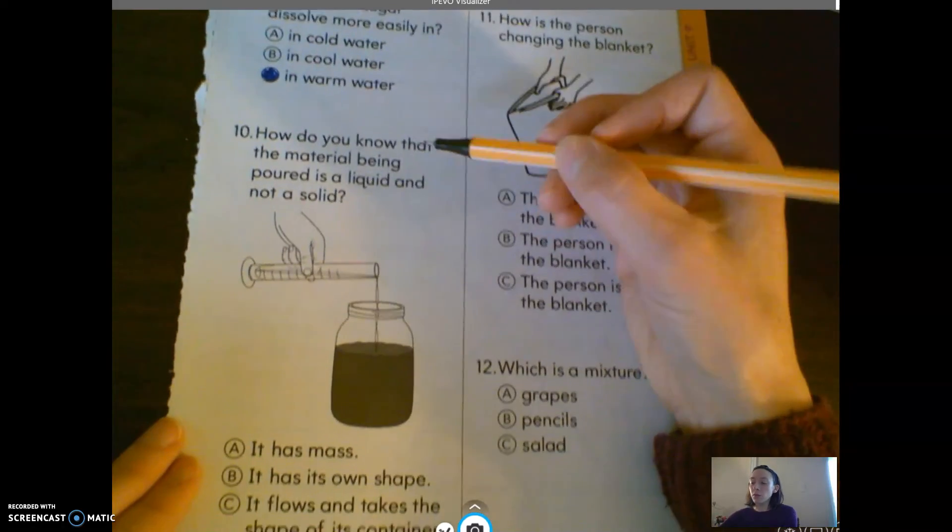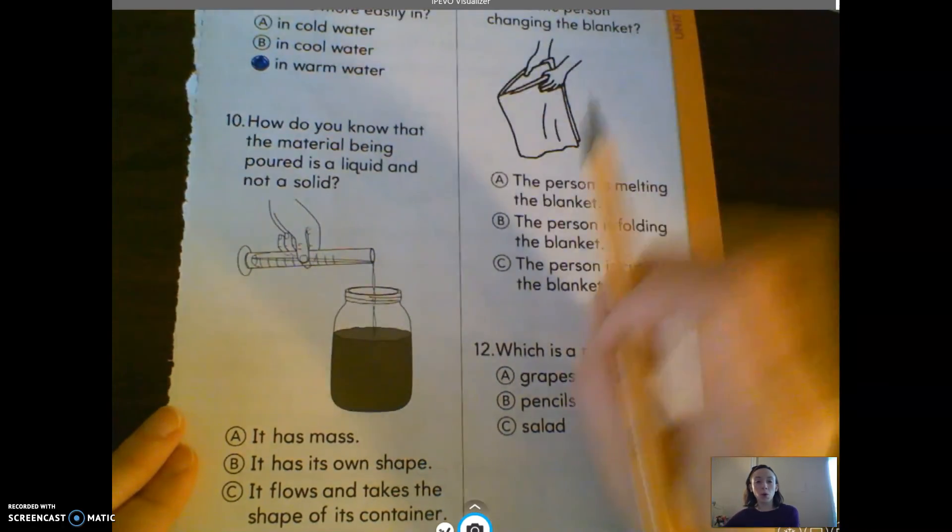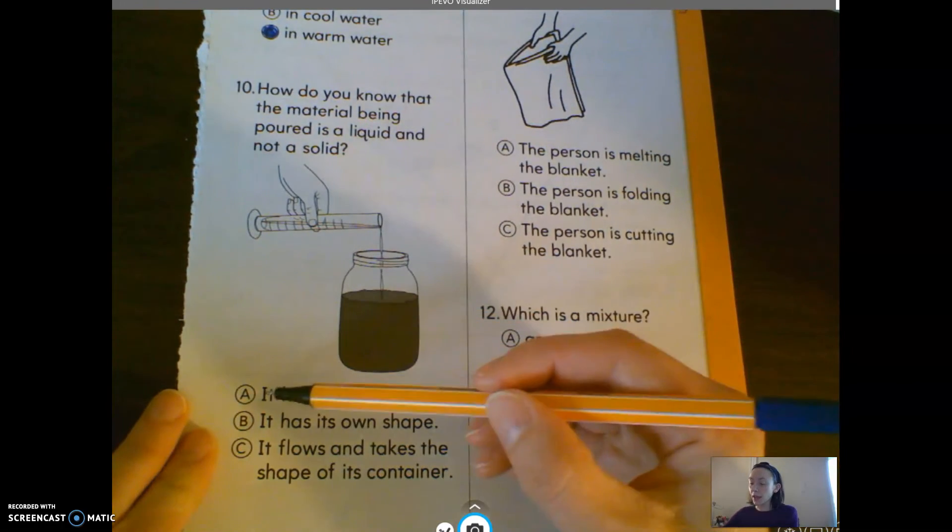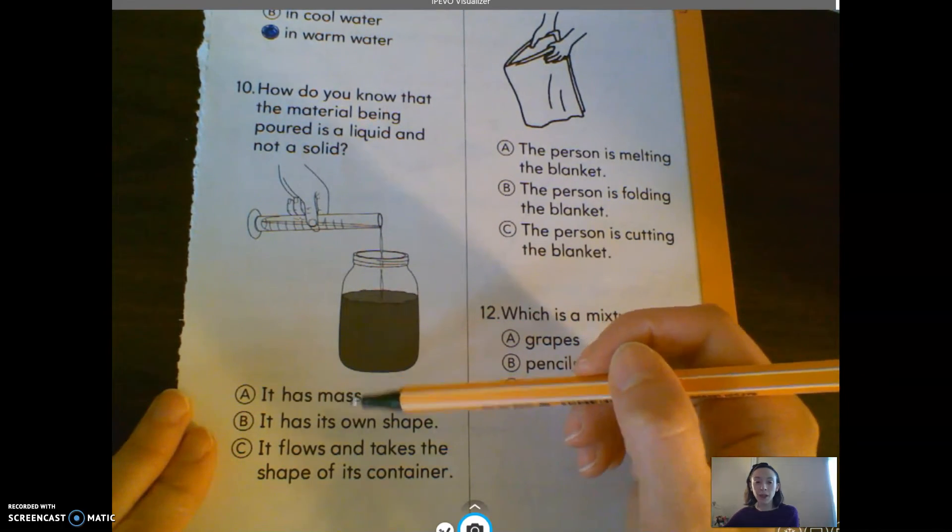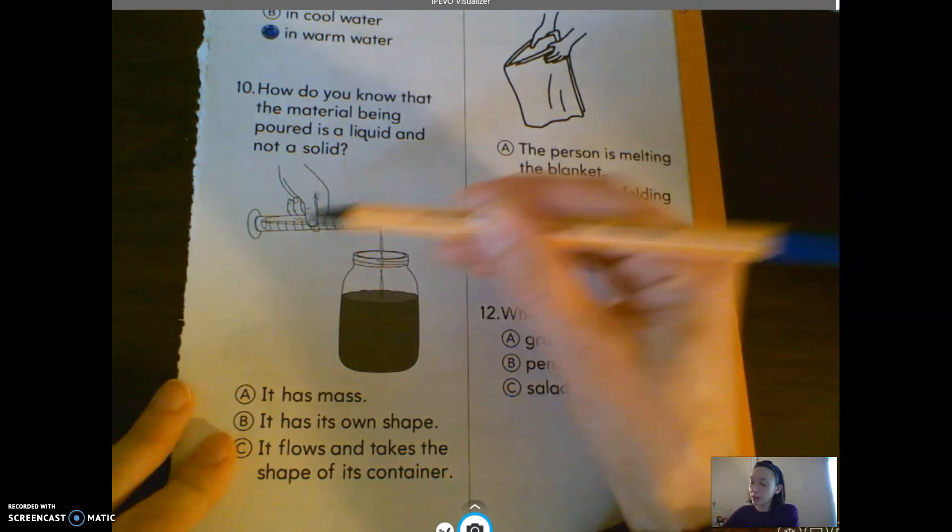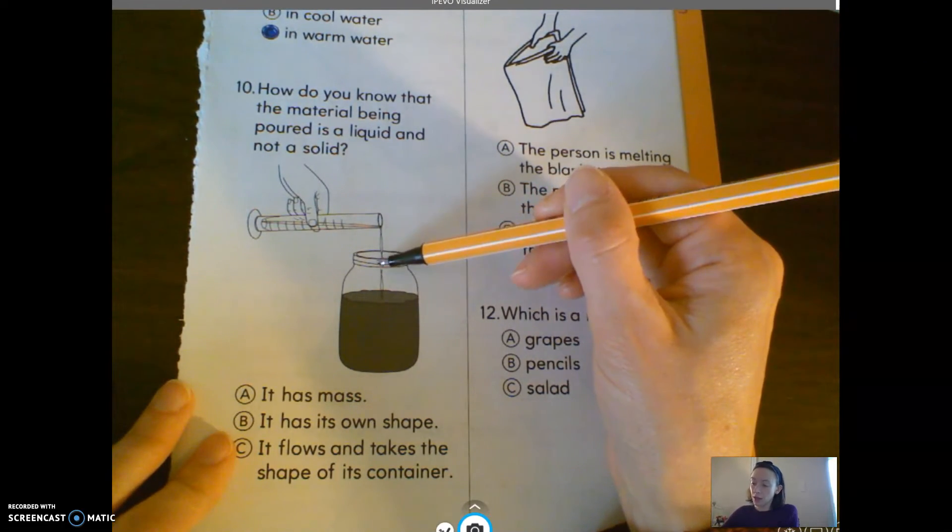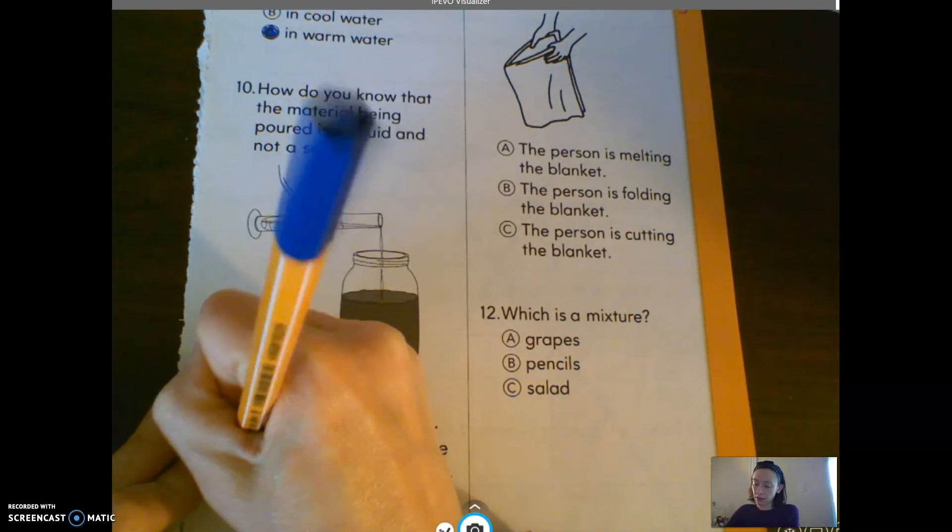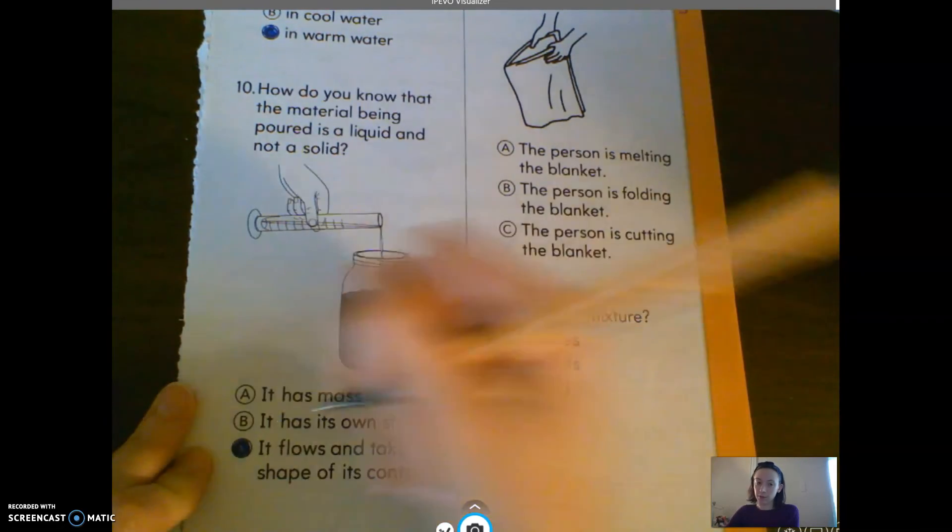Number 10 says, how do you know that the material being poured is a liquid and not a solid? A, it has mass. B, it has its own shape. Or C, it flows and takes the shape of the container. Well, into this jar, into that container.